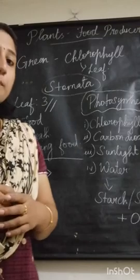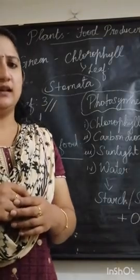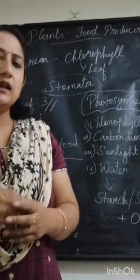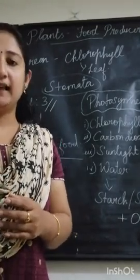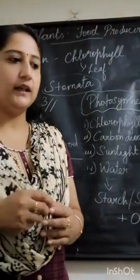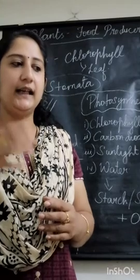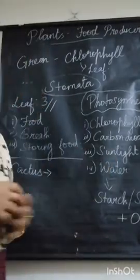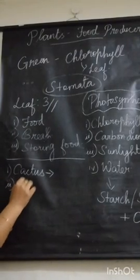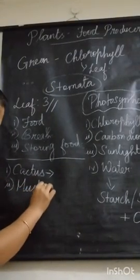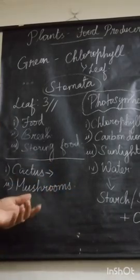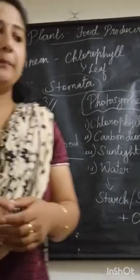Have you heard about mushrooms? They do not have any green colour pigment. So how do they get food? They get food from dead and decayed materials — from dead and decayed plants and animals in the ground. These are called saprophytes.